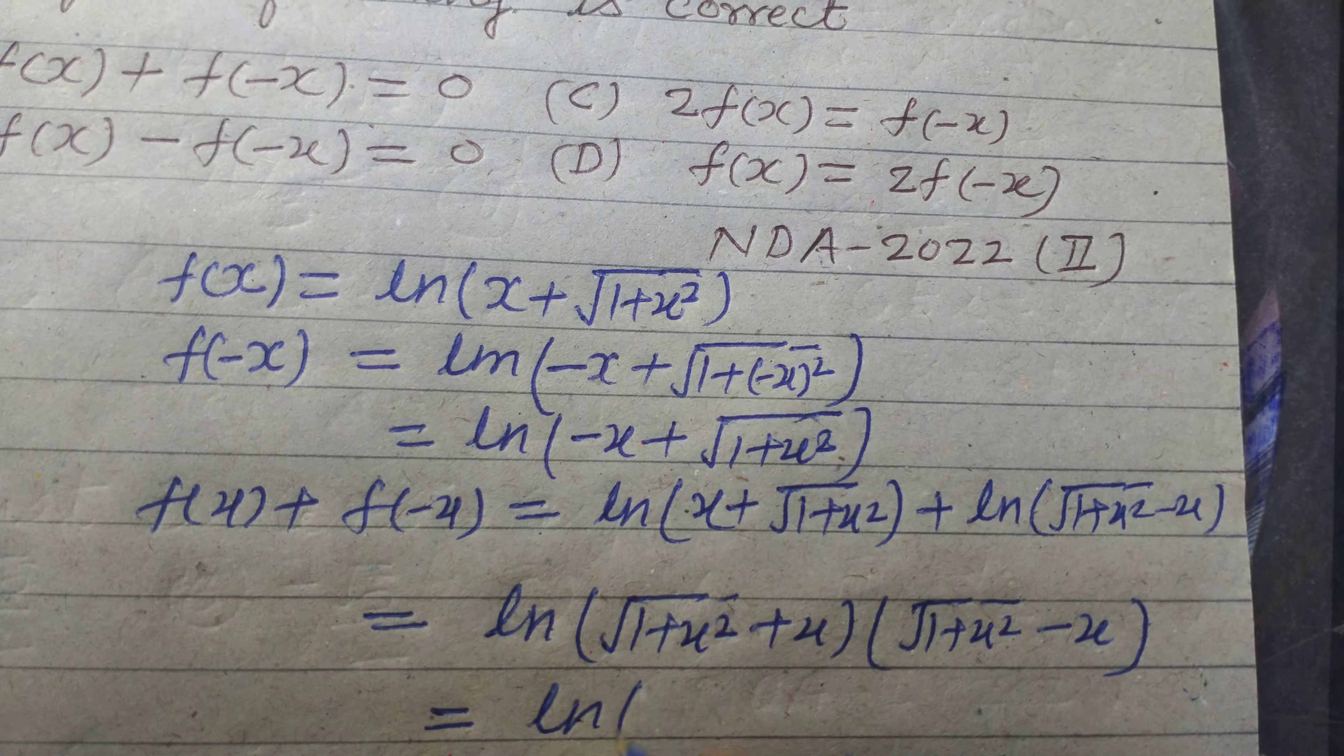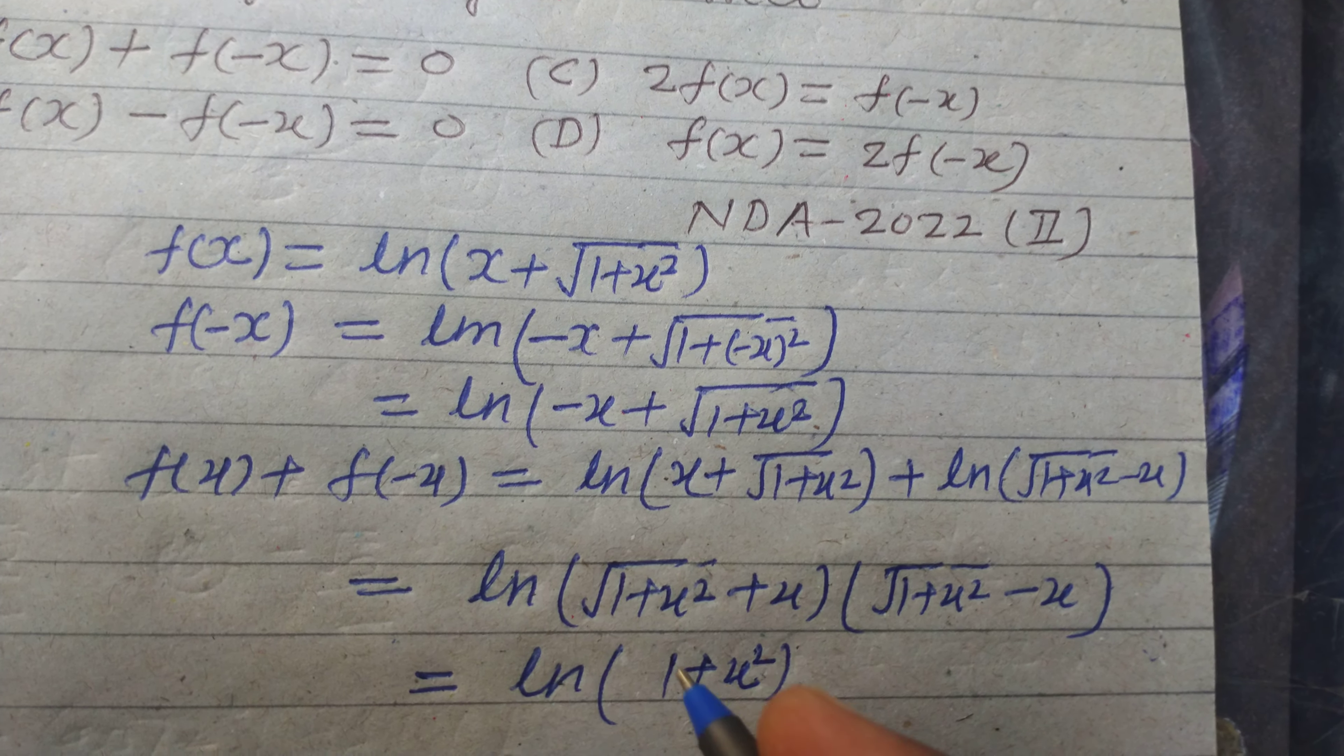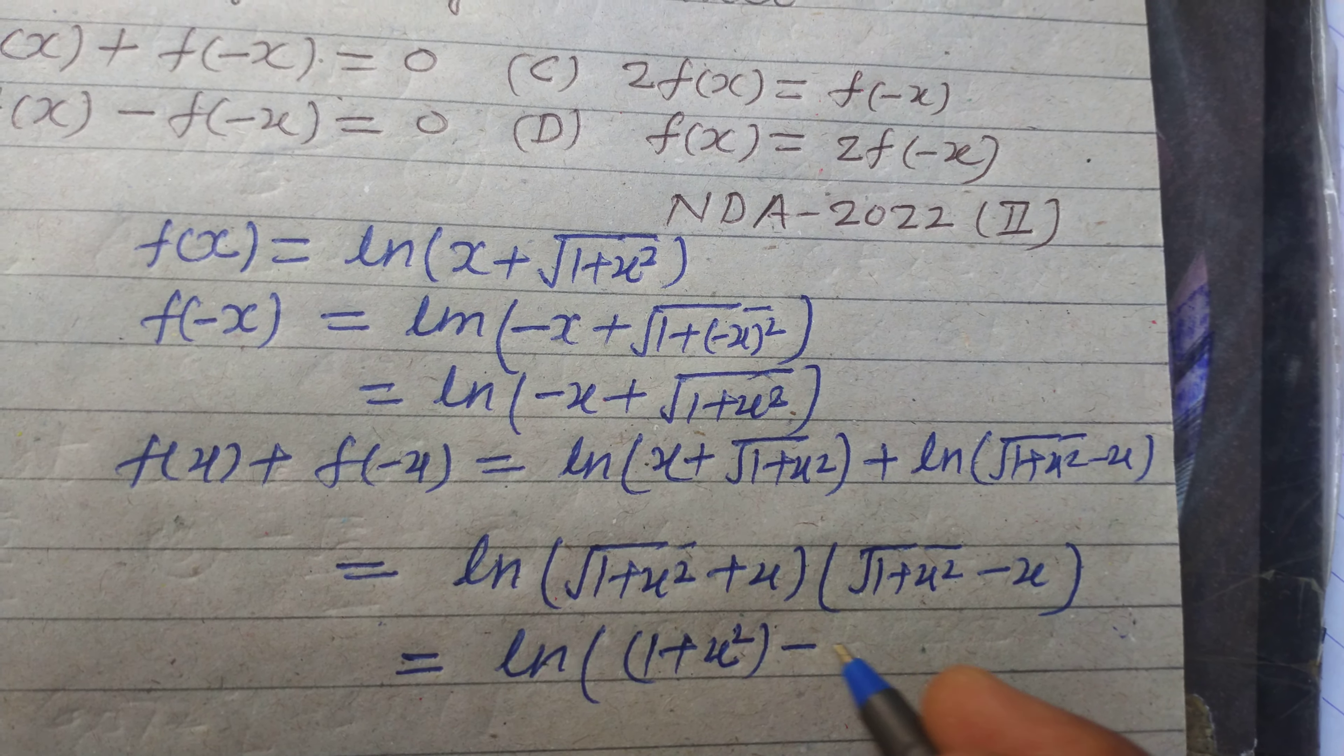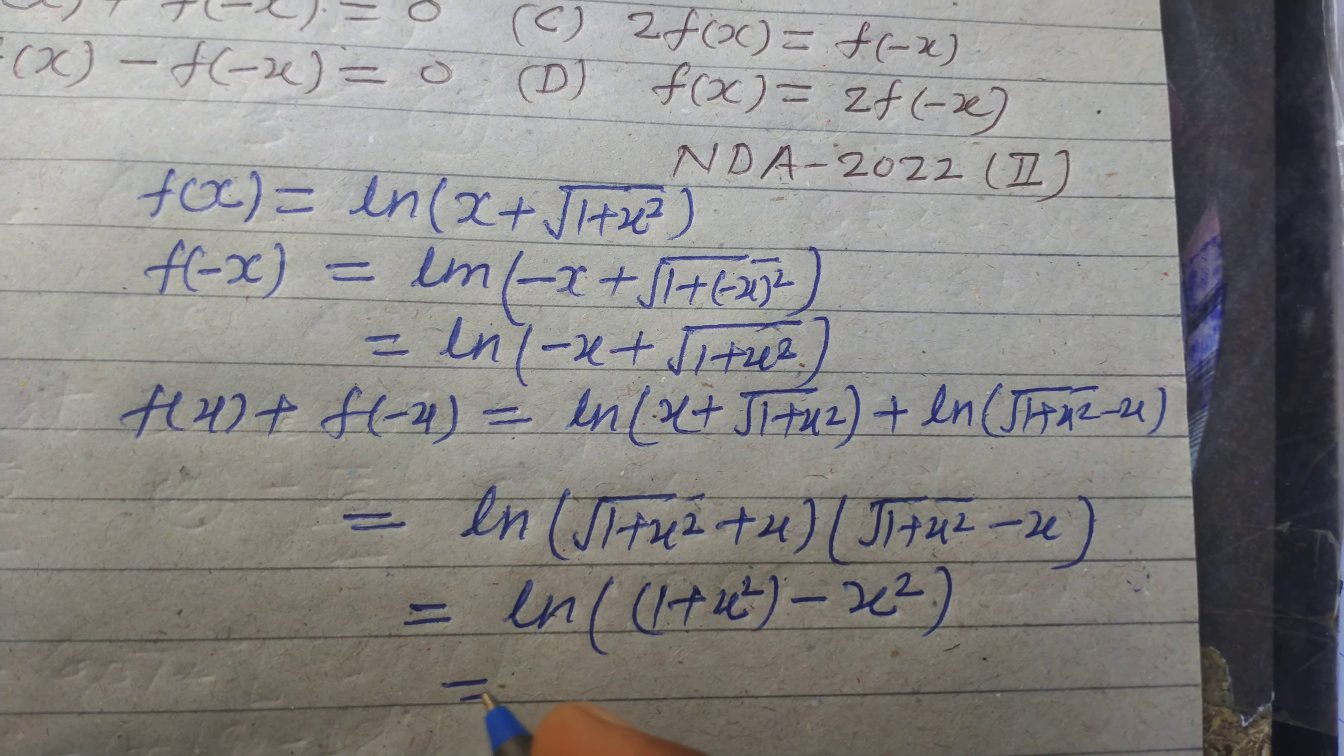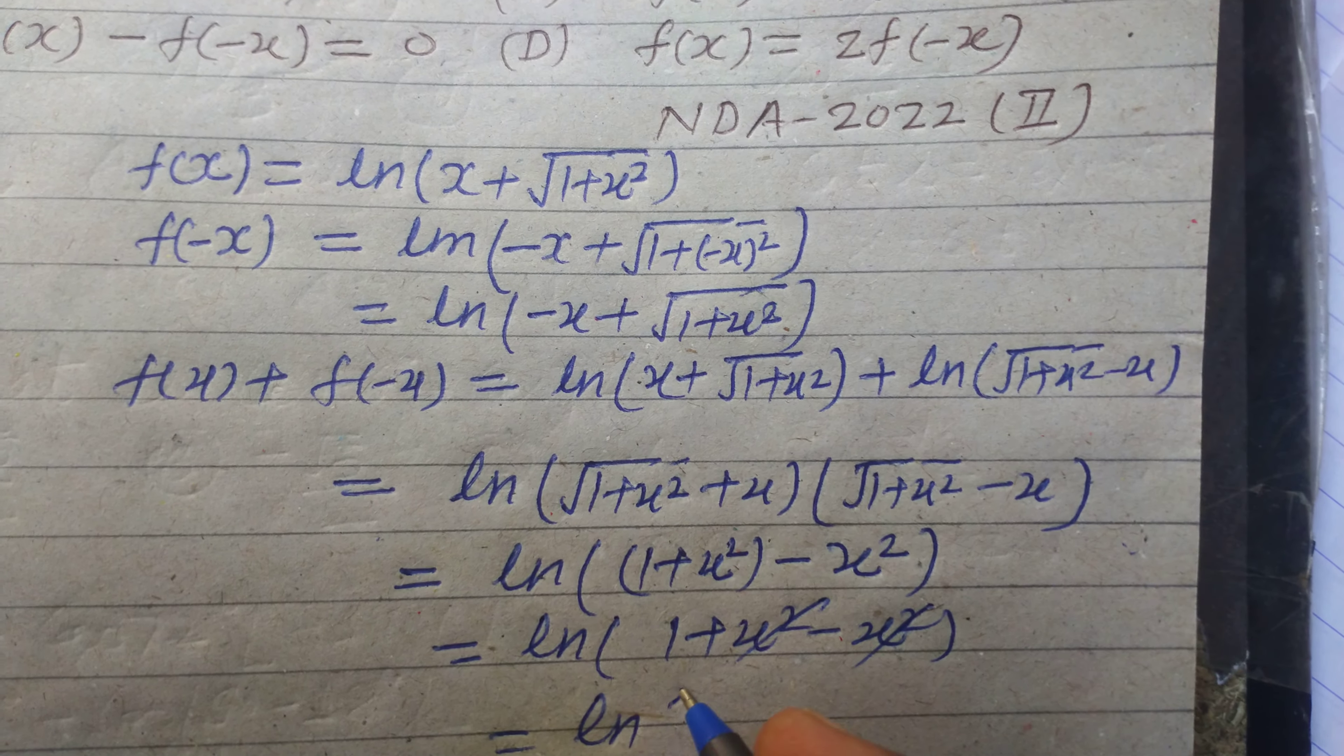Now we multiply using (a+b)(a-b). So ln((1+x²) - x²). This simplifies to ln(1).